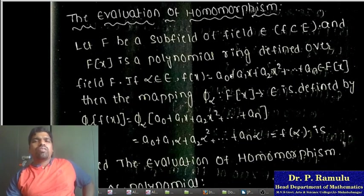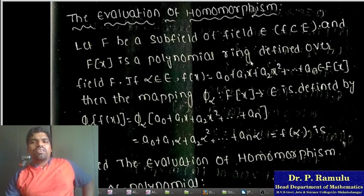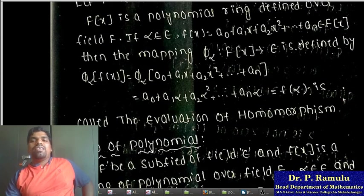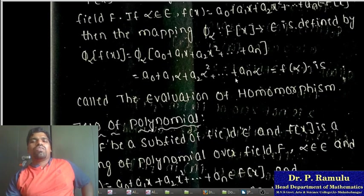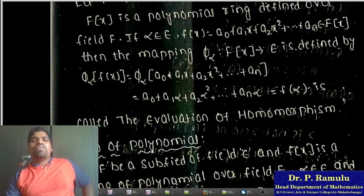Evaluation homomorphism: Let F be a subfield of a field E and F[x] be the polynomial ring defined over field F. If alpha belongs to E and f(x) = a_0 + a_1 x + a_2 x^2 + ... + a_n x^n, then the mapping phi_alpha: F[x] → E defined by phi_alpha(f(x)) = f(alpha) = a_0 + a_1·alpha + a_2·alpha^2 + ... + a_n·alpha^n is called the evaluation homomorphism. This mapping clearly satisfies homomorphism properties.